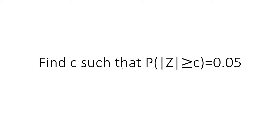We want to find c such that the probability of the absolute value of Z is greater than or equal to c equals 0.05.